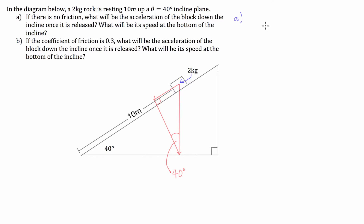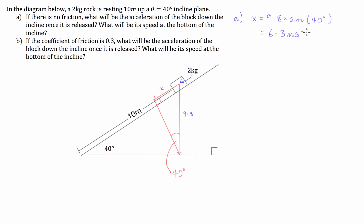So let's get into question A. We can fill in the parts we know: the acceleration due to gravity straight down is 9.8 meters per second squared. We are looking for the component going down the slope, so let's just call this x. Because this is a right-angle triangle, we can use simple trigonometry: x is going to equal 9.8 times the sine of 40 degrees, and that is equal to 6.3 meters per second squared. So that's the first part of part A done.